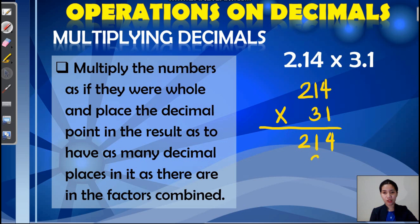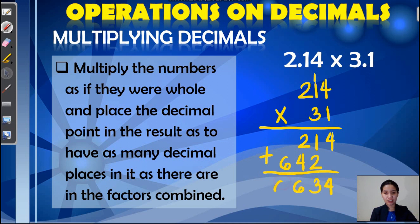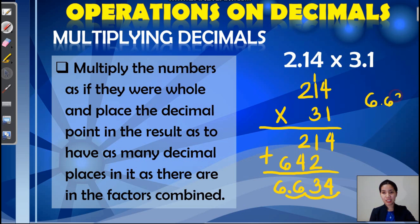Next, we have 3 times 4 is 12. Carry 1. 3 times 1 is 3, plus 1 we have 4. 3 times 2 is 6. Next, we need to add the numbers, so we have 4, 3, 6, and 6. Now, the question is where to place the decimal point. As we can see in our given, the first decimal has 2 decimal places and the second has 1 decimal place. Therefore, in total we have 3 decimal places. So from the right, we count 3 decimal places: 1, 2, and 3. So the answer in this problem is 6.634, or 6 and 634 thousandths.